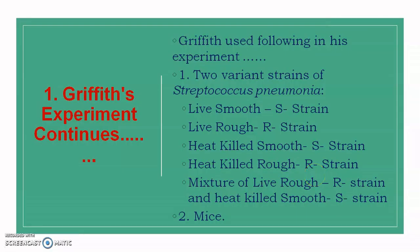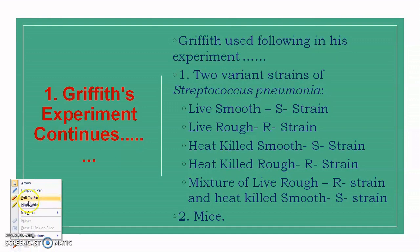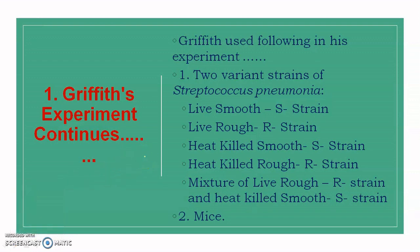Griffith's experiment was conducted on mice, using two variants of Streptococcus pneumoniae. The materials used include: first, the smooth (S) strain — pathogenic, virulent, produces a polysaccharide capsule, and produces smooth surface colonies on nutrient media. Second, the rough (R) strain — non-pathogenic, does not produce a polysaccharide capsule, and produces rough surface colonies.